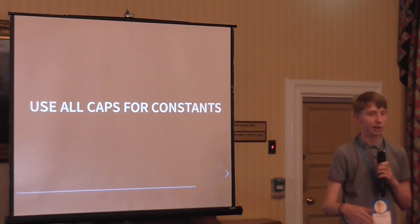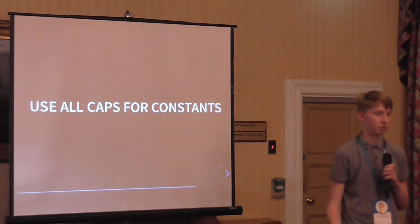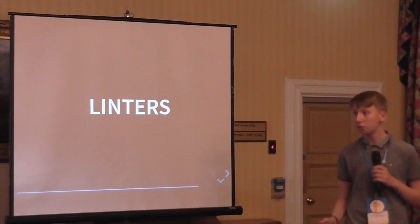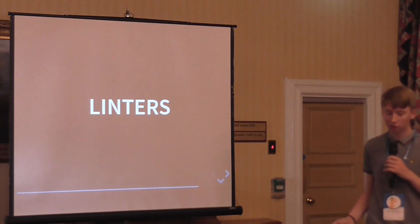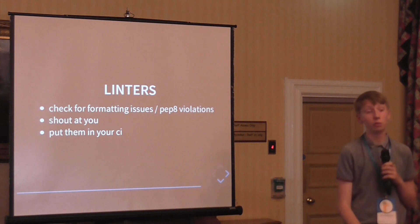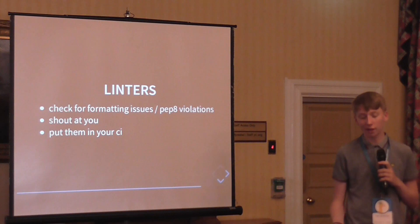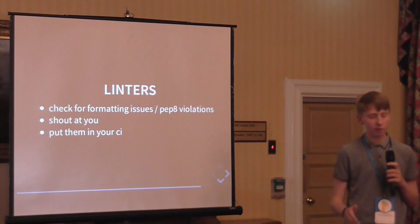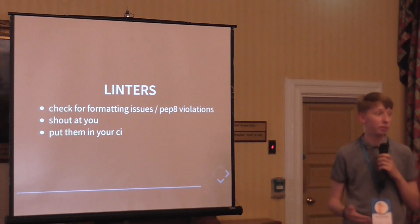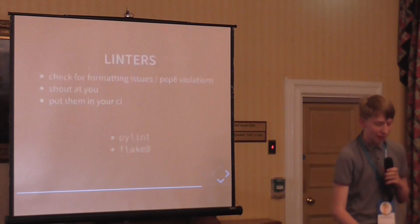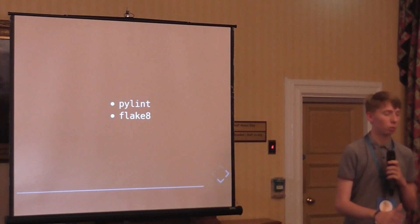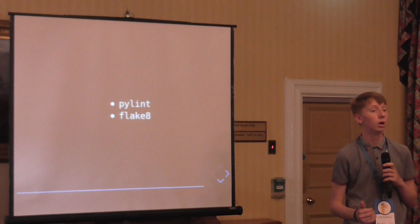Use all caps for constants — if you're saying pi equals 3.141, that should be in uppercase so you know it's constant. There are a lot of rules, and it can be hard to remember them all. You can use something called a linter — a linter will check for formatting issues and PEP violations, and you can put them in your CI or version control to automatically run when you push or make commits. Two popular ones are pylint and flake8. Some linters are more relaxed, some more strict, so using multiple is helpful.